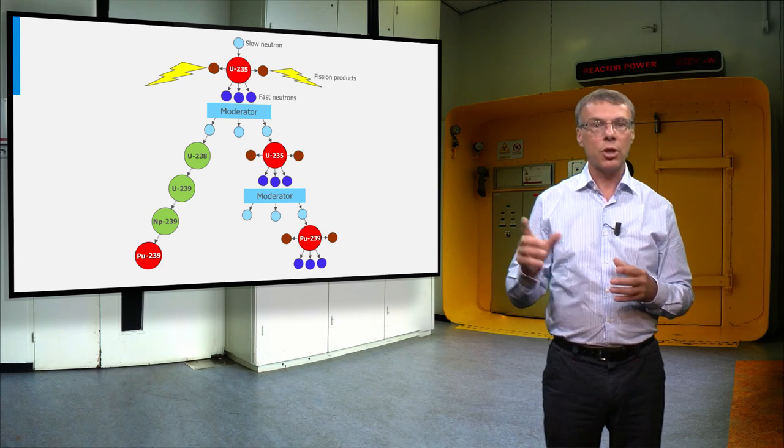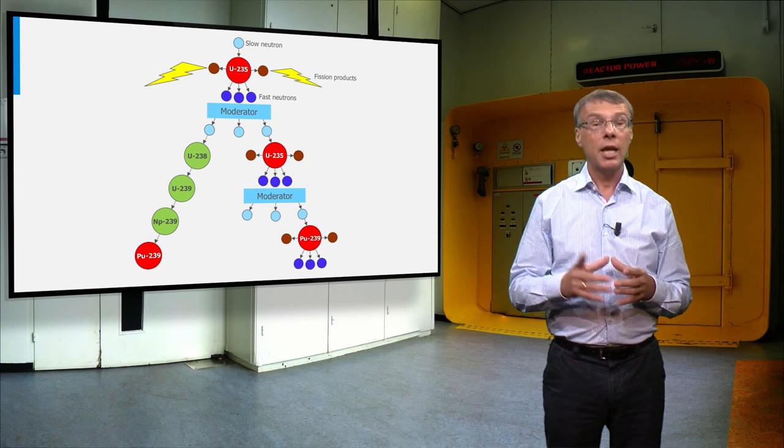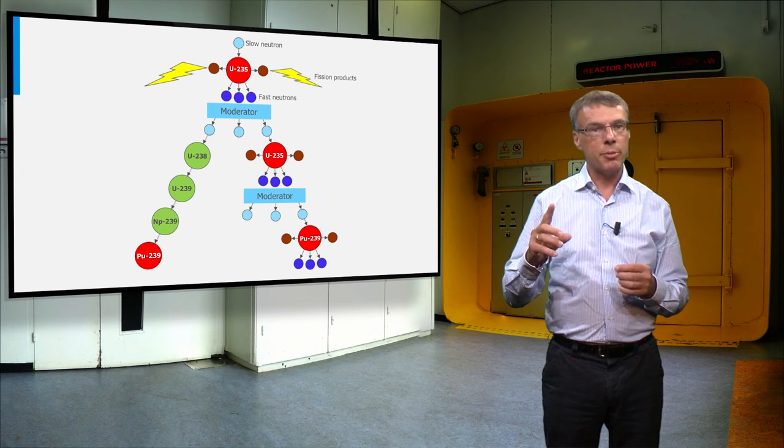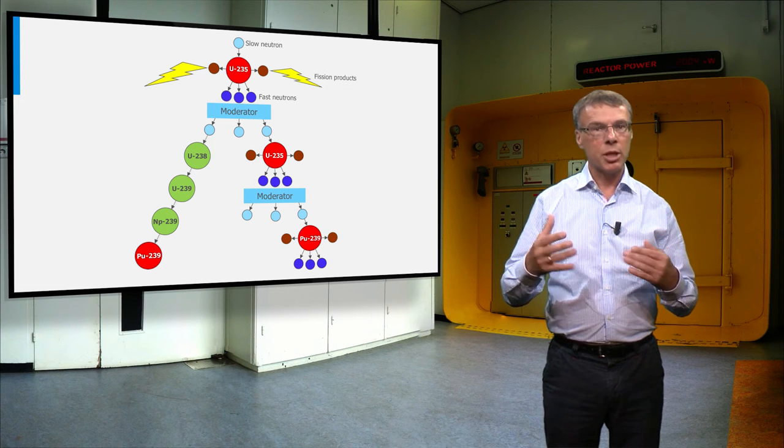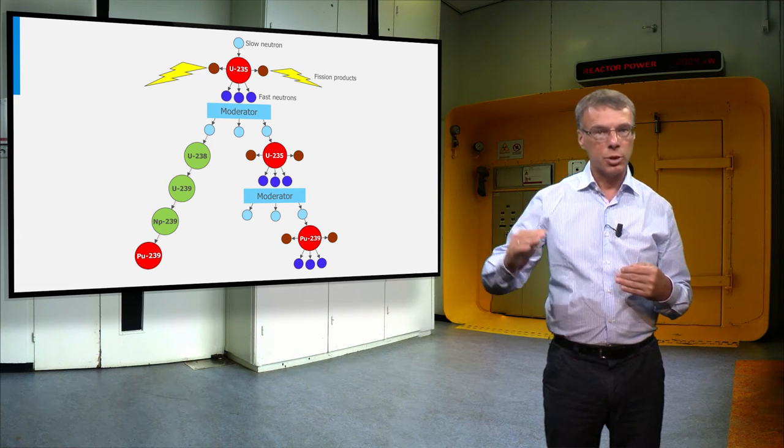Here we show the principle of the fission chain reaction again. Let's first simplify the scheme a bit by omitting in the plot the two intermediate decay steps from uranium-238 to plutonium-239.